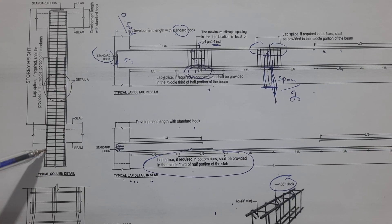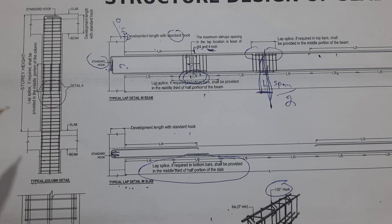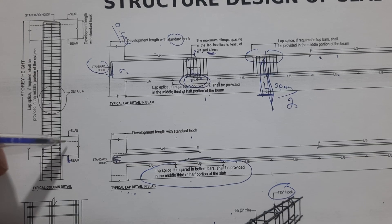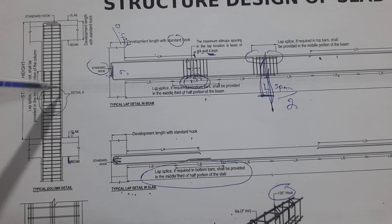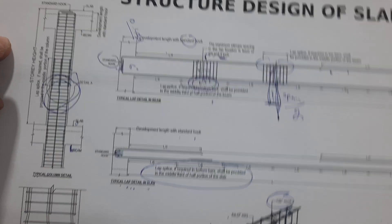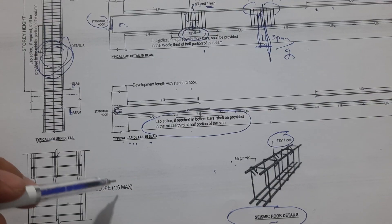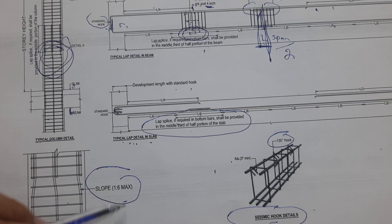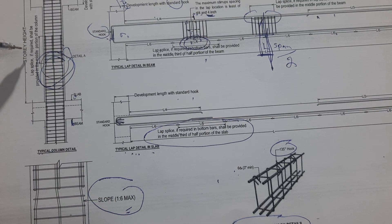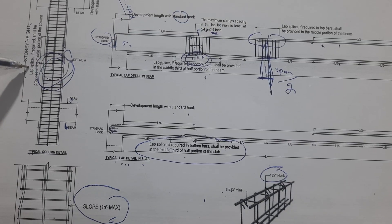Next, you can see typical column details. Here you can see the beam and the RCC slab. If you need to provide lapping, here is the section. For concrete mix of 1:6, the lap or splice, if required, shall be provided in the middle portion of the column.